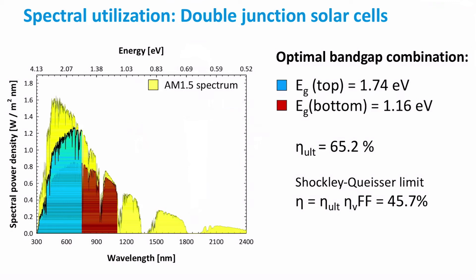Now, let's look at the spectral utilization of a double junction solar cell. This double junction solar cell is composed of a top and bottom cell — the top cell with a wide band gap absorber and the bottom cell with a low band gap absorber. The blue area represents the fraction of energy that can be used by the top cell; the band gap here is 1.7 eV, which corresponds to a wavelength of around 700 nm. The portion of energy that can be used by the bottom cell is marked in brown. The bottom cell absorber has a band gap of about 1.2 eV, corresponding to a wavelength of around 1,100 nm.